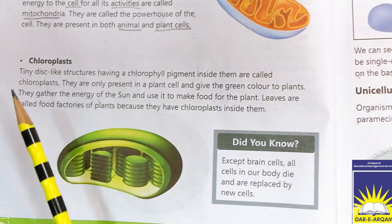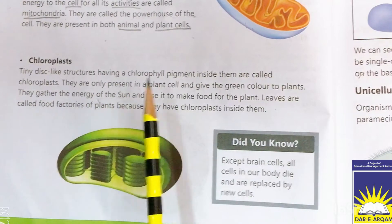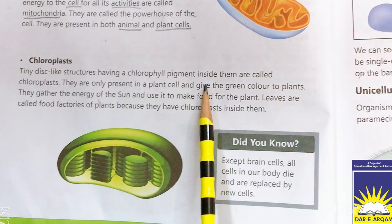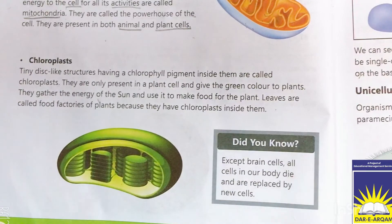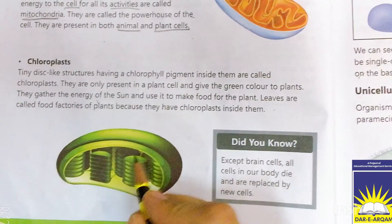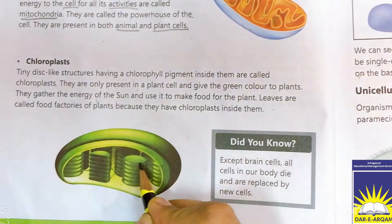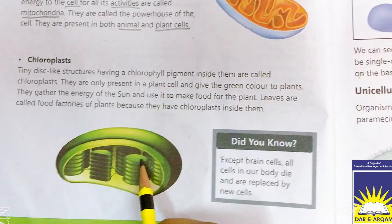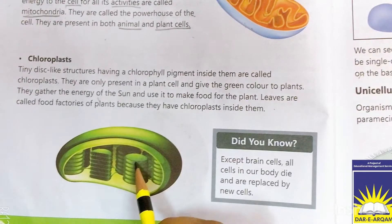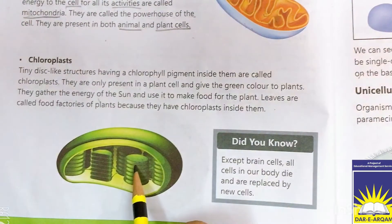Chloroplasts کیا ہوتے ہیں — tiny disc-like structures having a chlorophyll pigment inside them are called chloroplasts. یہ disc-like structure ہوتے ہیں اور ان کے اندر chlorophyll pigment ہوتا ہے — اسے ہم chloroplasts کہتے ہیں۔